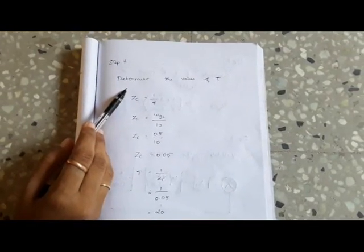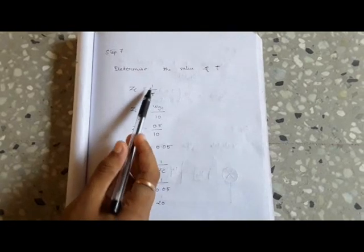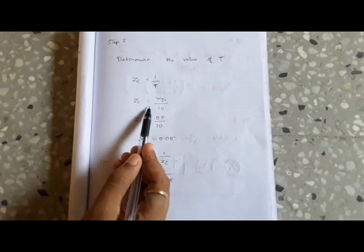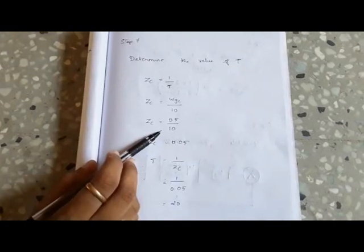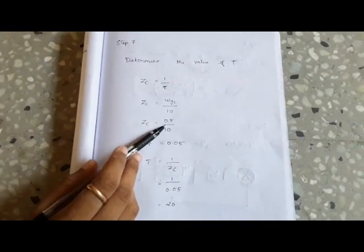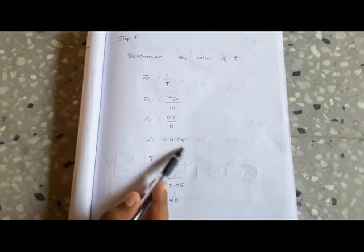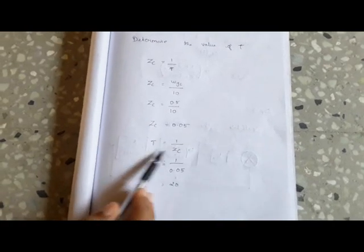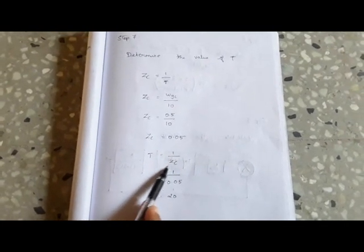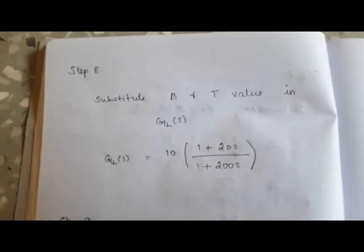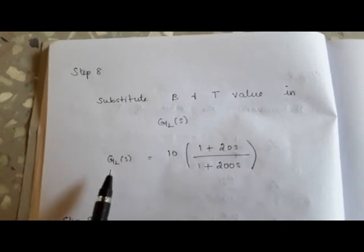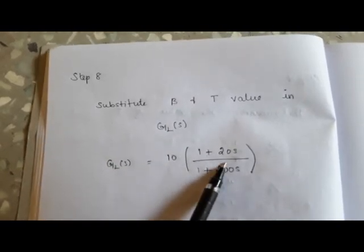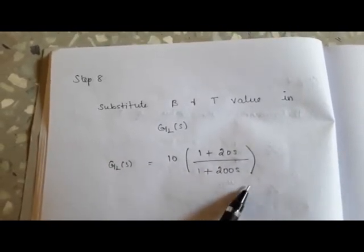Next we determine the value of T. The zero of the lag compensator Z_L(s) equals 1/T, and this zero is placed at one-tenth of the new omega_gc. Since omega_gc is 0.5, the zero Z_L equals 0.05. Substituting into βT equals 1/Z_L gives T equal to 20. Substituting β equal to 10 and T equal to 20 into G_L(s), we get G_L(s) equal to 10 times (1 plus 20s) divided by (1 plus 200s).